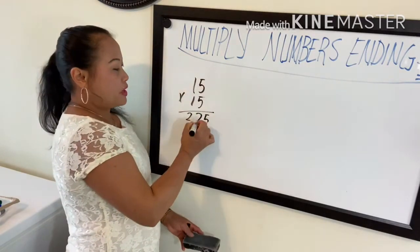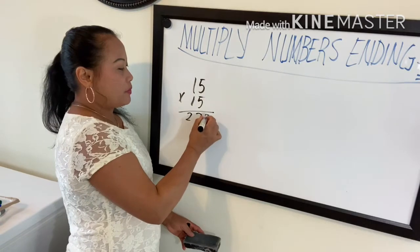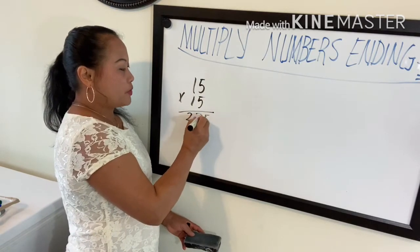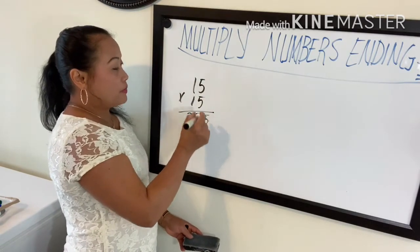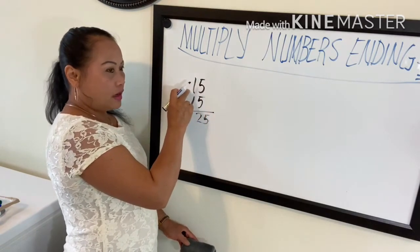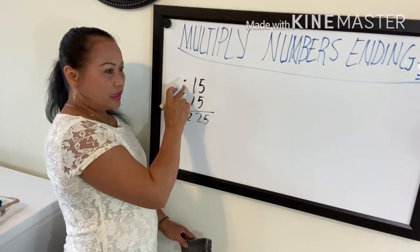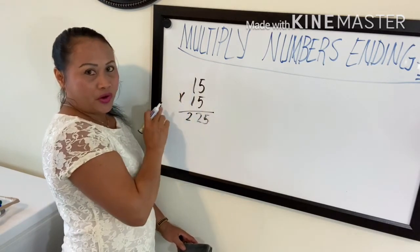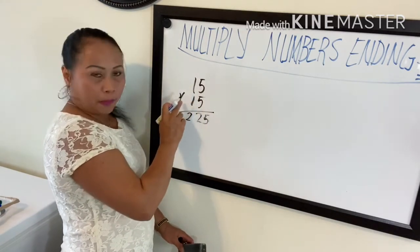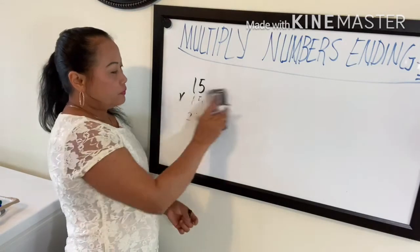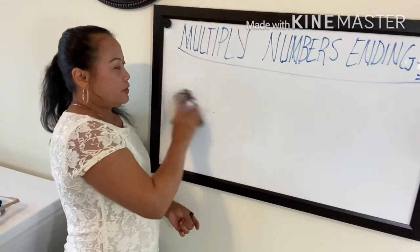As long as the last number is five, you don't need to carry — just bring down 25. Then always add one to the top first number only, and then multiply.